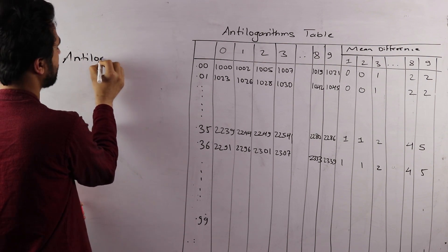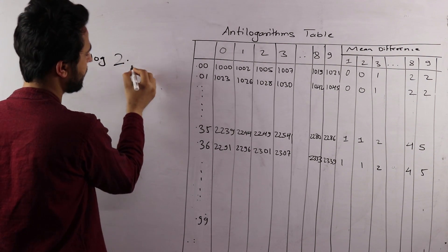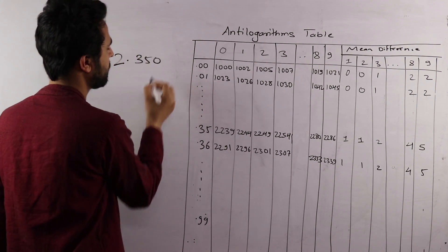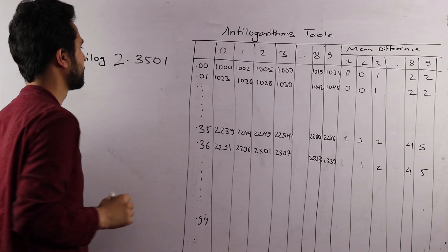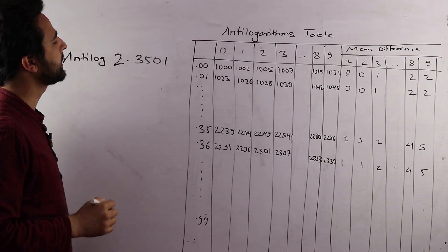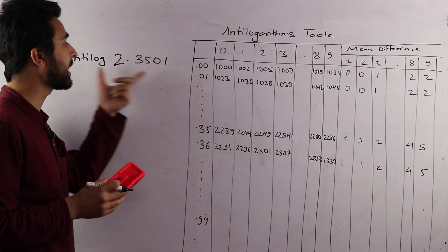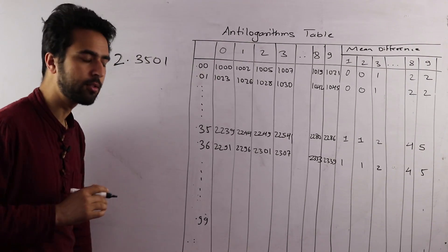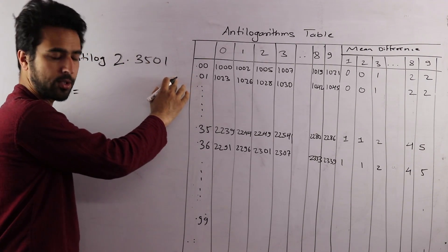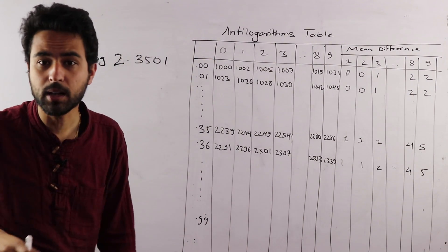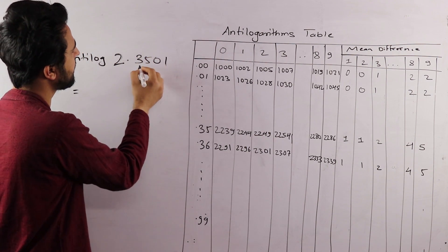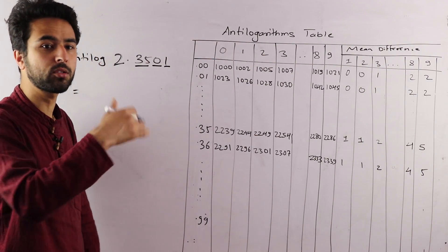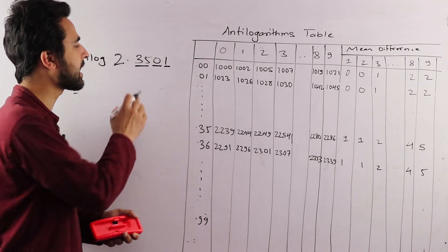The question is: Antilog 2.3501. This is the question — Antilog 2.3501. It will be 501, so the question is 501.